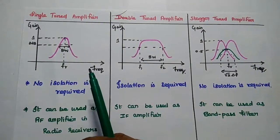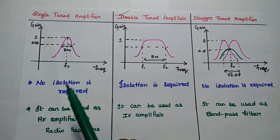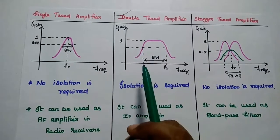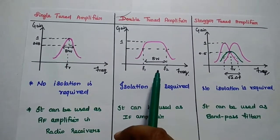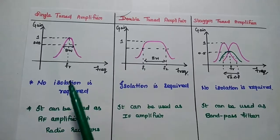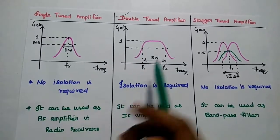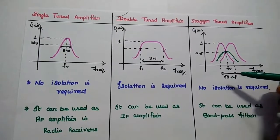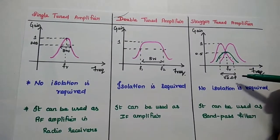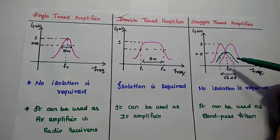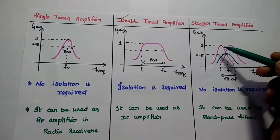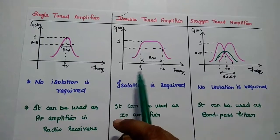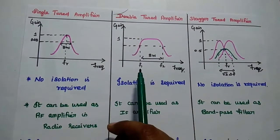Regarding the frequency response of the tuned amplifiers: the single tuned amplifier has a narrow bandwidth. The double tuned amplifier has a wider bandwidth compared with the single tuned amplifier. The stagger tuned amplifier has square root two times the bandwidth of the single tuned amplifier. The resonant frequencies of the stagger tuned are different, but for the double tuned amplifier the resonant frequencies are the same.